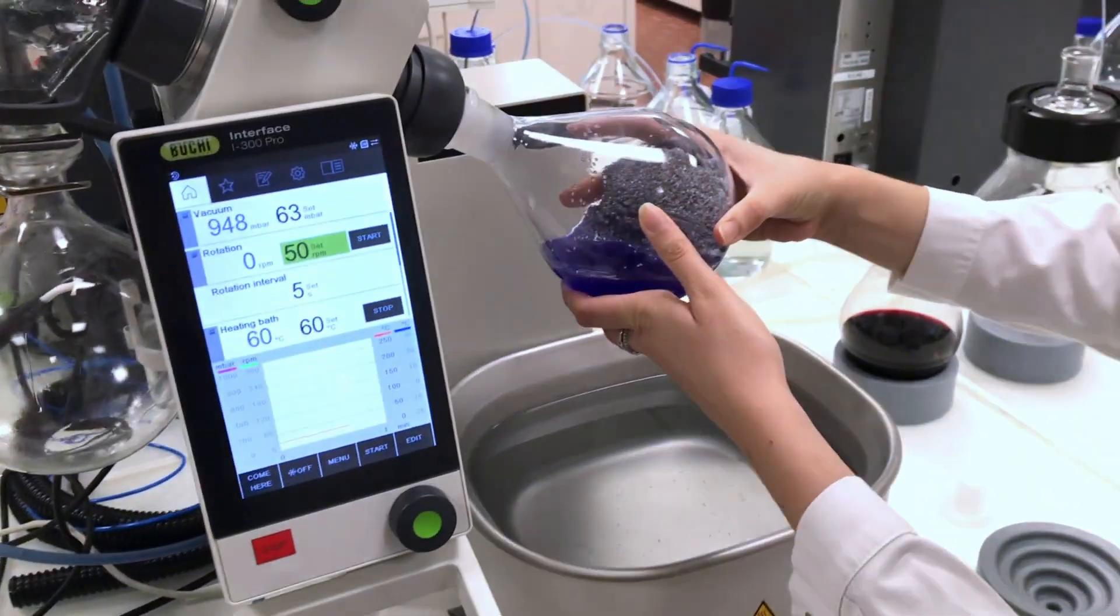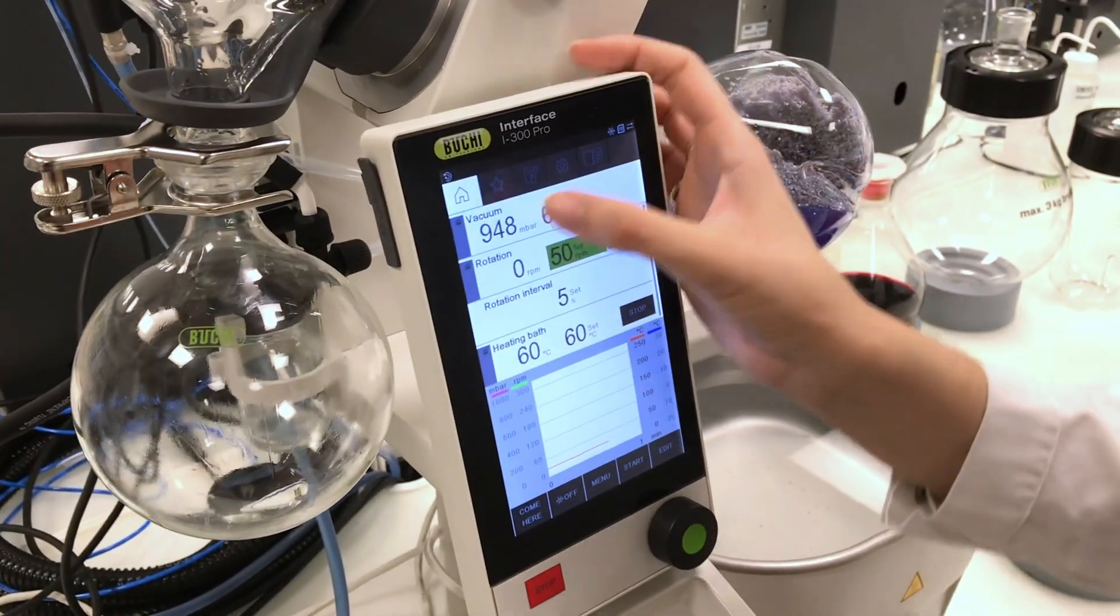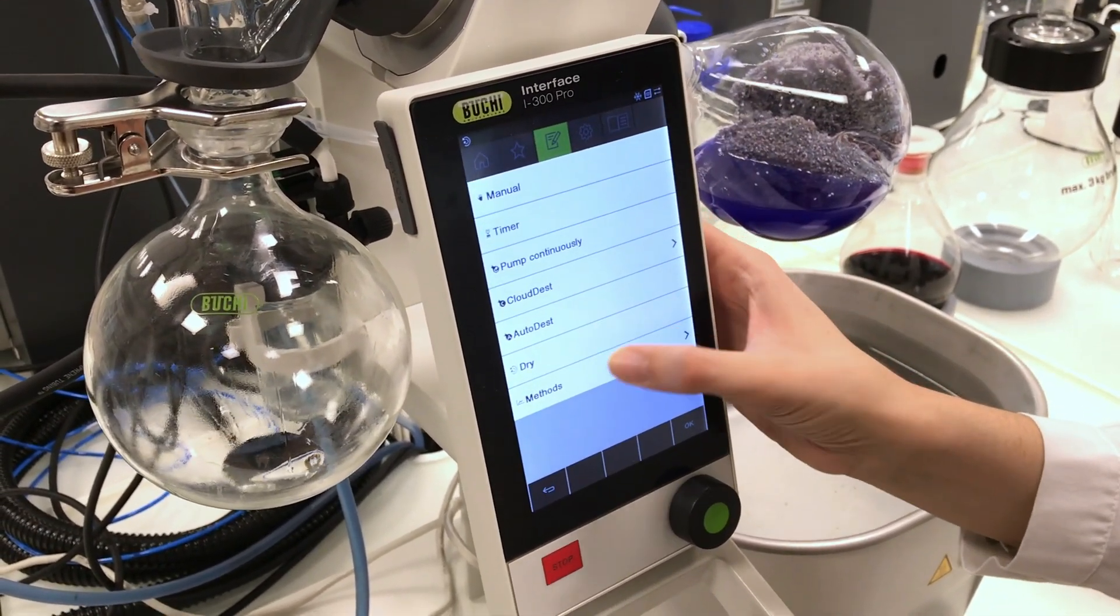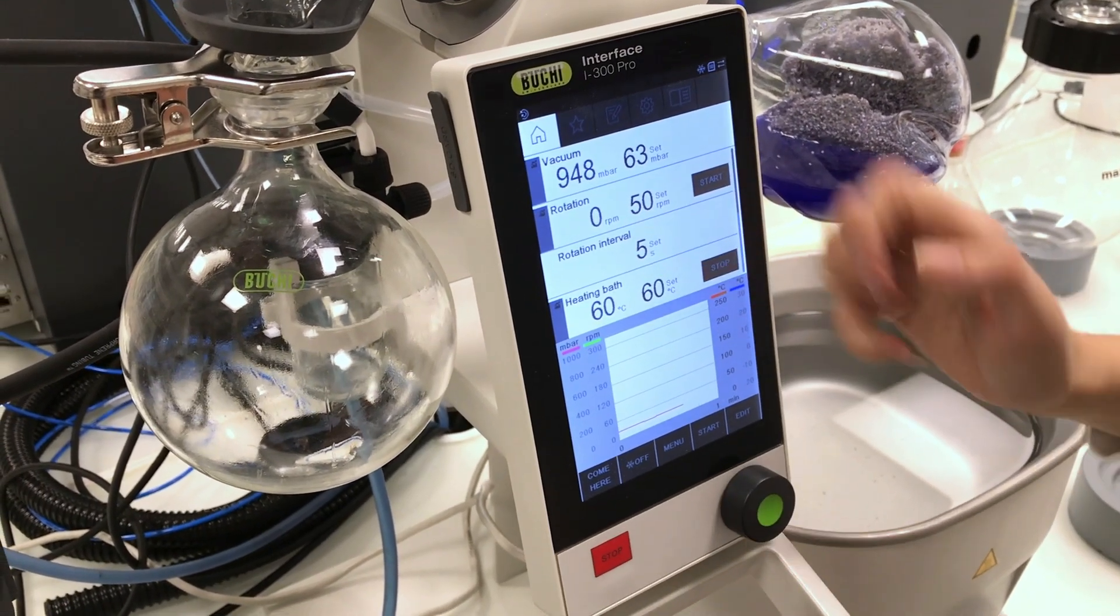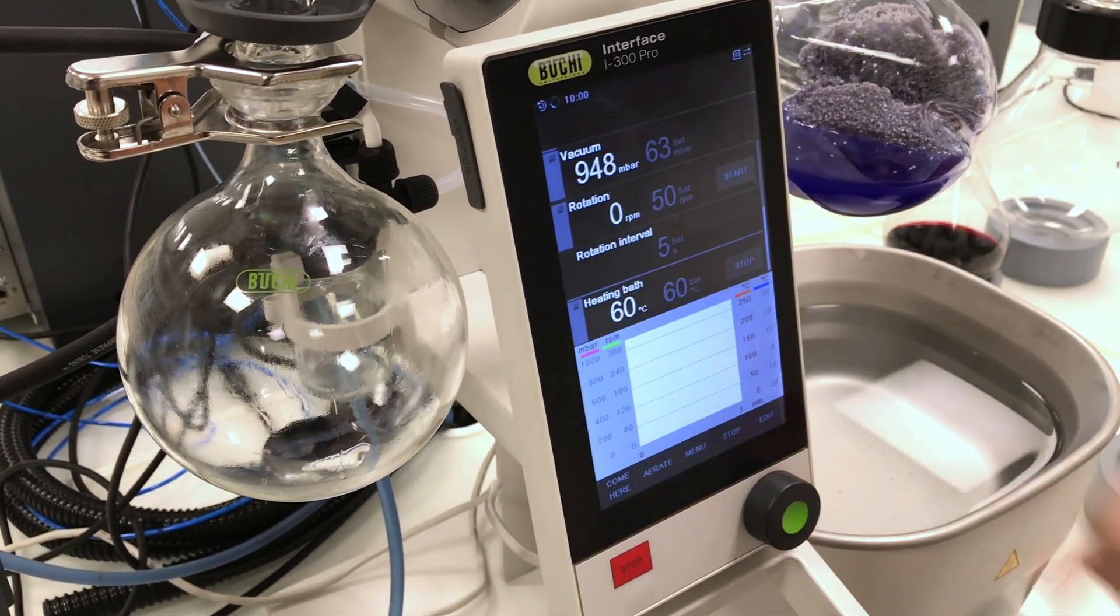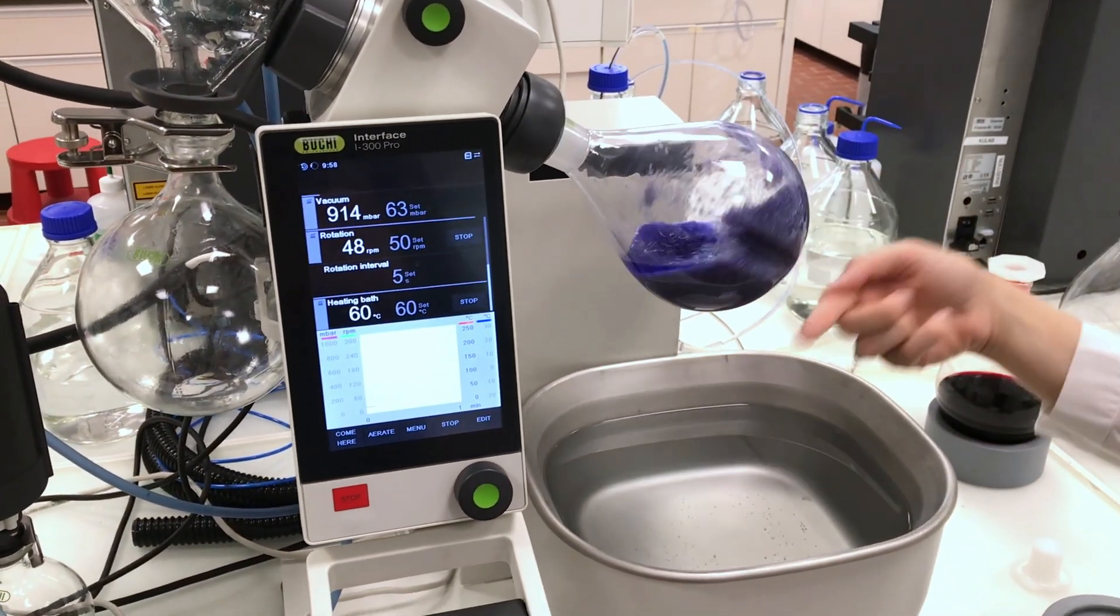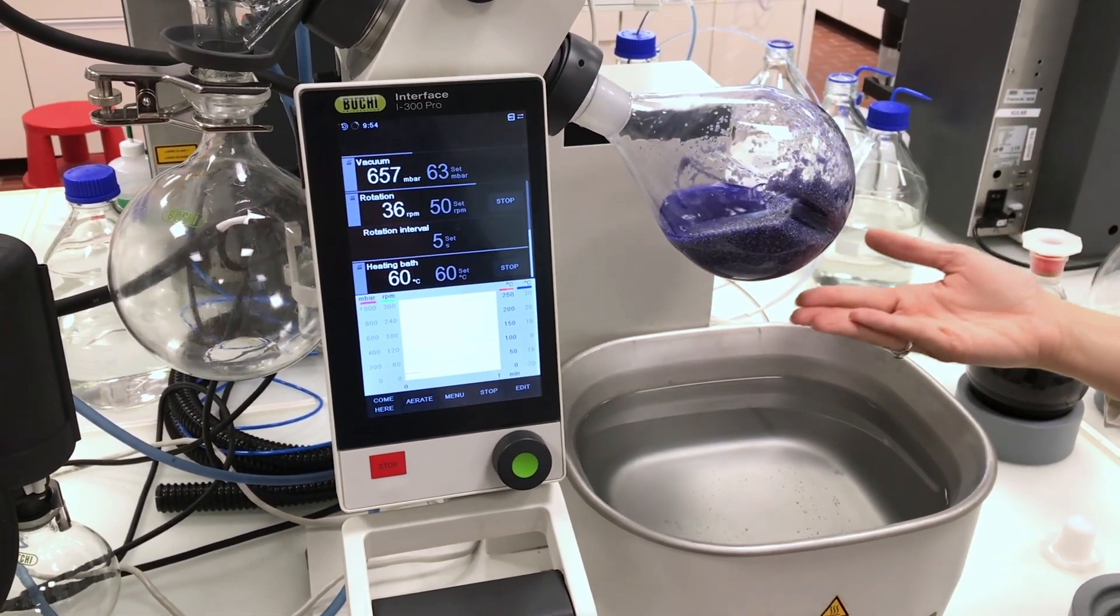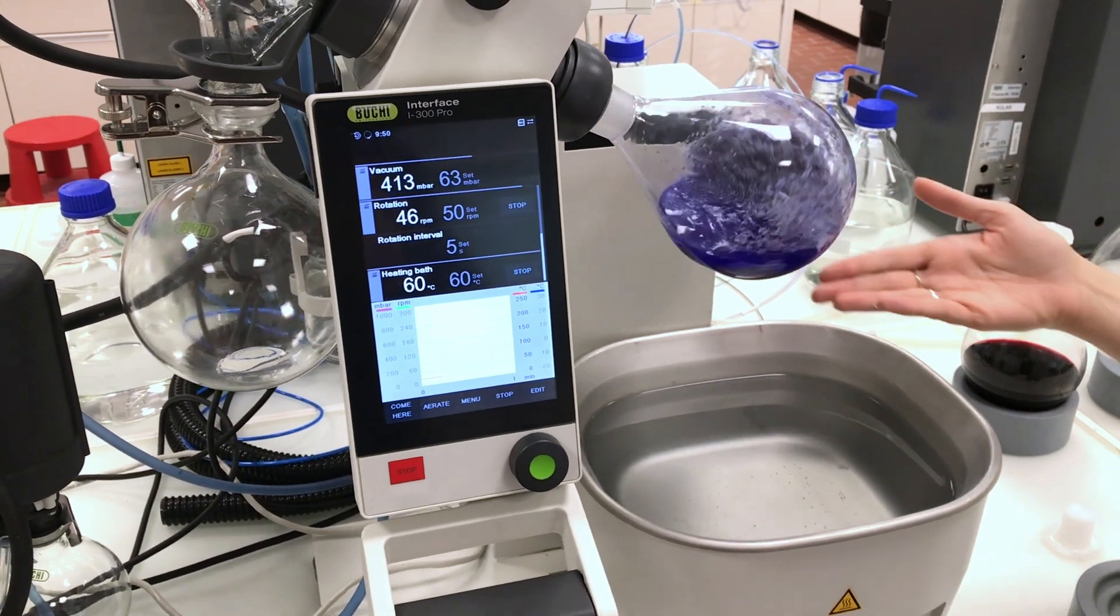So now we're going to check what we call the dry mode. It's just here in the library and I choose a rotation interval of five seconds. What does that mean? It means that the flask is going to rotate on one side for five seconds and then start rotating on the other side. So again, if you have powdery compounds that stick to the flask, this prevents this issue.